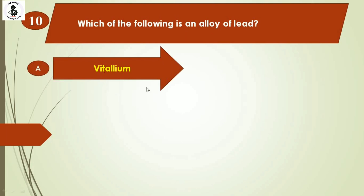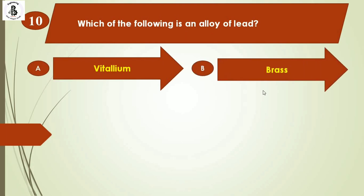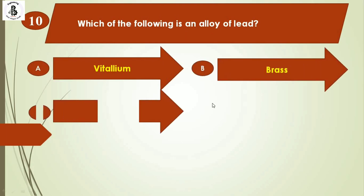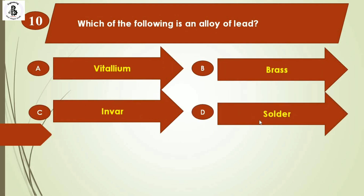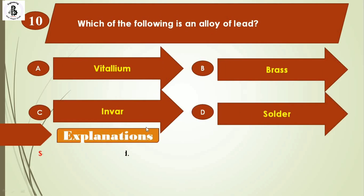Question 10: Which of the following is an alloy of lead? Option A: Vitalium, Option B: brass, Option C: Invar, Option D: solder. Solder is an alloy of lead. The right answer is Option D.